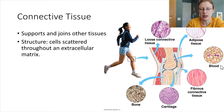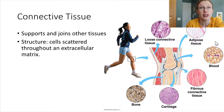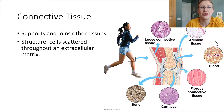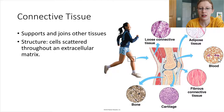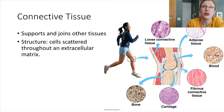Blood is another interesting example of connective tissue. It's fluid — it's the only connective tissue that is fluid — but it still follows that same criteria. We have individual cells and they are separated by some type of a matrix. The matrix is fluid, mostly water in this case.